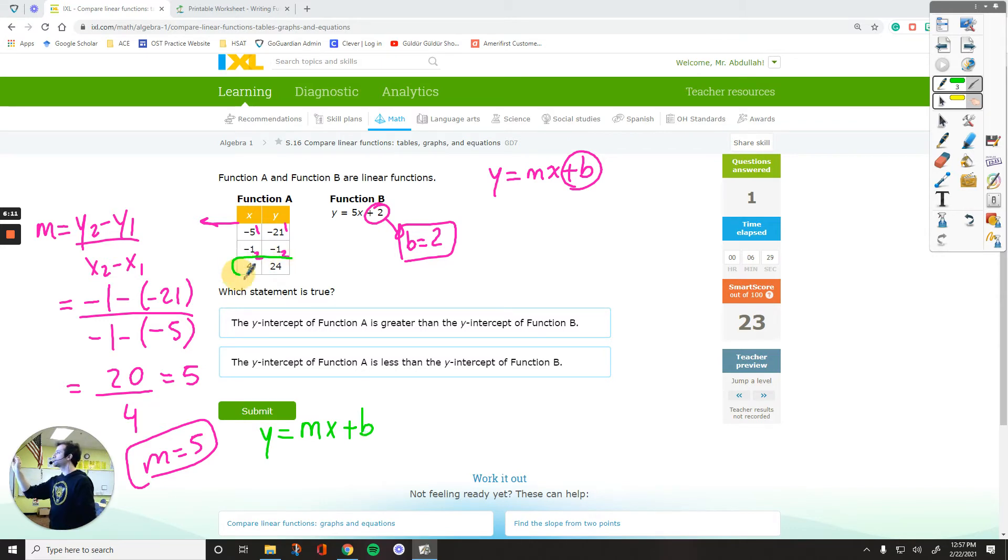Plug in the slope and another point from the table. Just pick one point from the table and then plug in the slope. I want to use this point because these numbers are positive. They look more favorable for me. y is 24. I'm plugging it in. Equals, the slope is 5. We just figured it out. And then I'm plugging in 4 for the x plus b. 5 times 4 is 20. What number should I add to 20 to get 24? So if you subtract 20 from each side, b is going to be equal to 4.